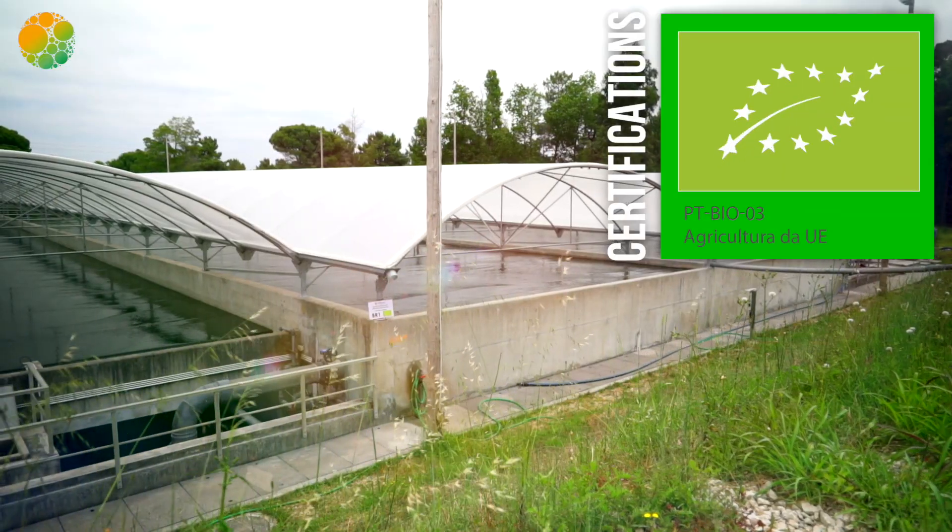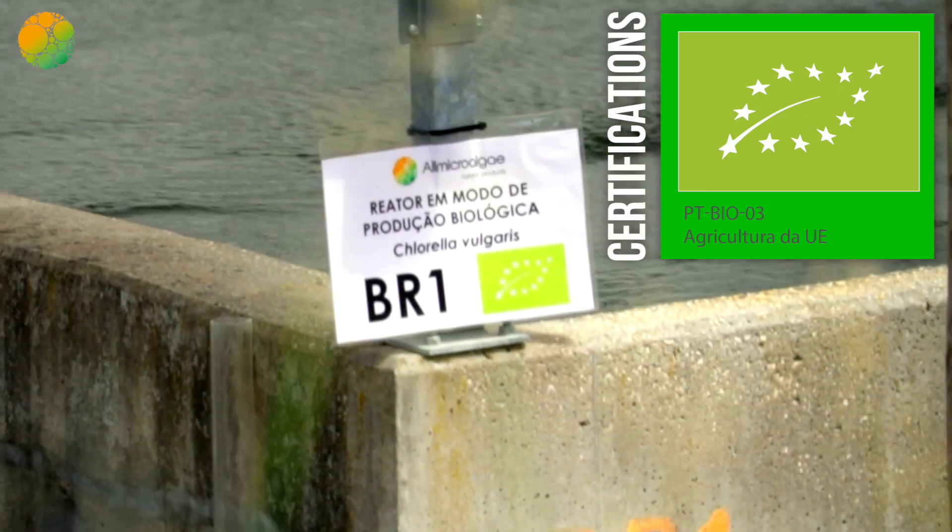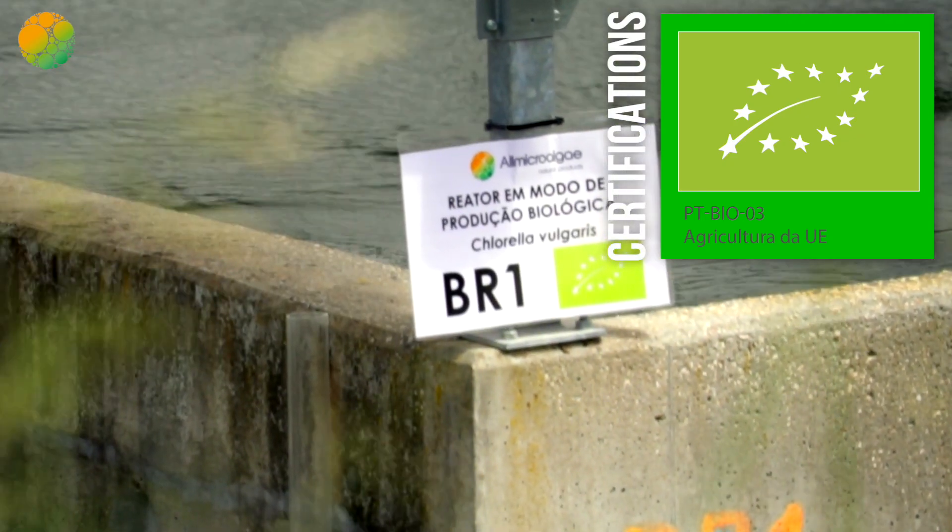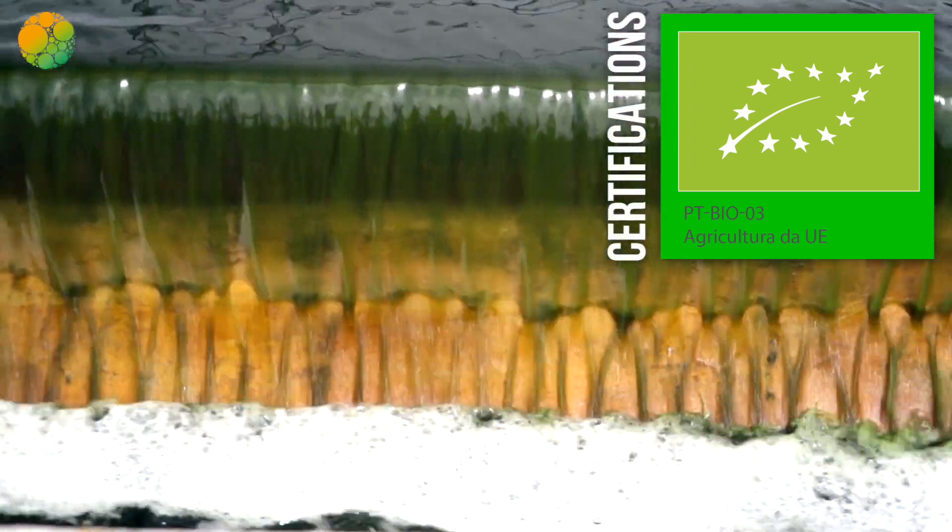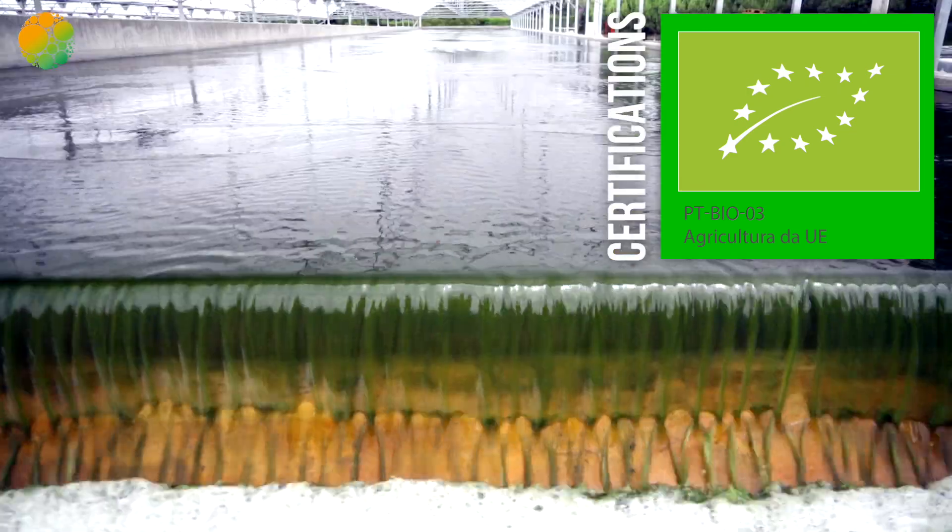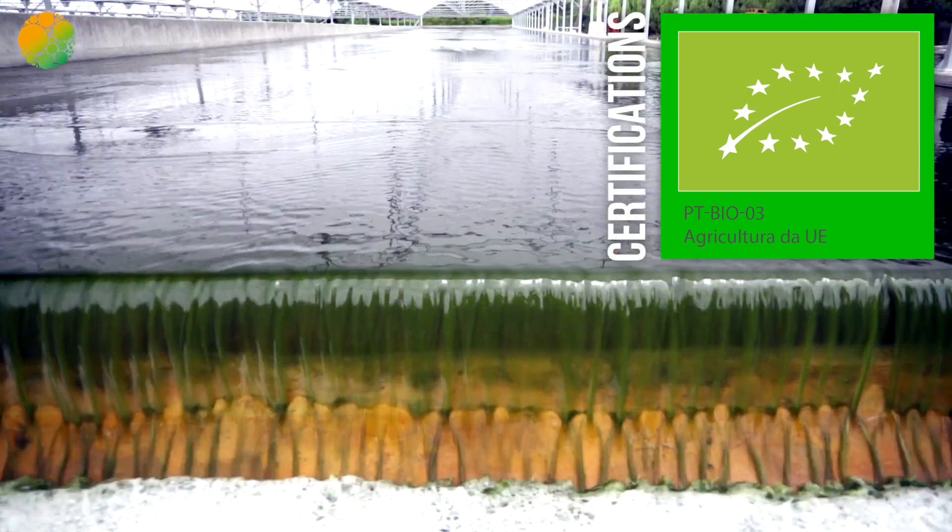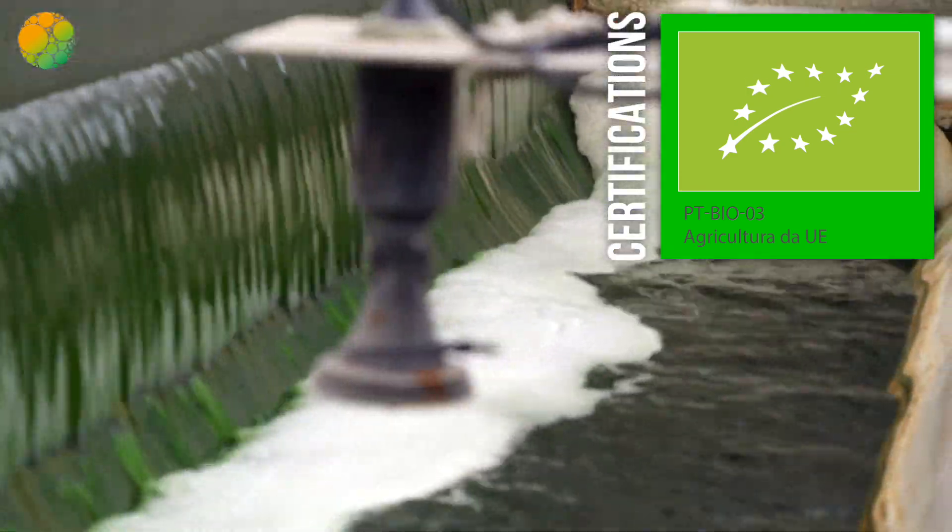In addition, in 2018, the EU organic certification was obtained for the chlorella vulgaris species, positioning All Microalgae as the only European organic chlorella producer. Later, in 2021, EU organic certification was also obtained for spirulina.